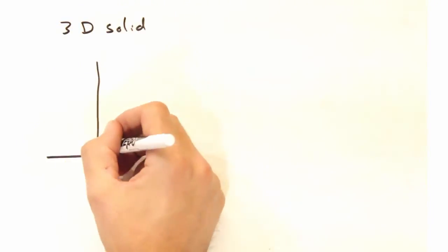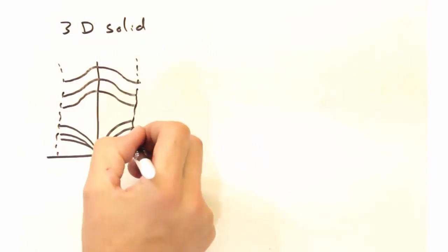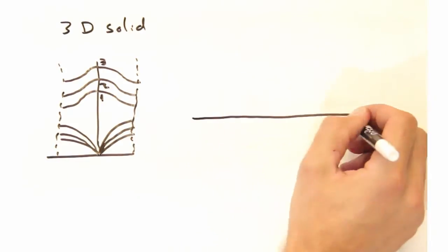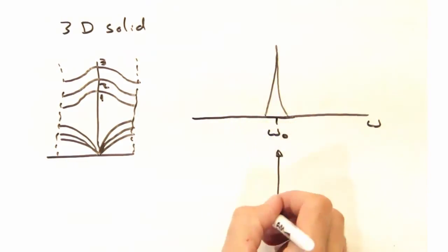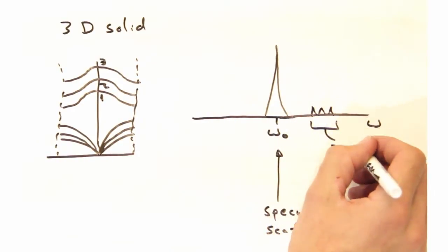So let's see how this translates to a real experiment. If I've got a three-dimensional solid that has three optical branches, one, two, and three, and I have a detector that can resolve different frequencies and their associated intensities, what I'm going to see is first a peak at the original frequency due to specularly scattered light.